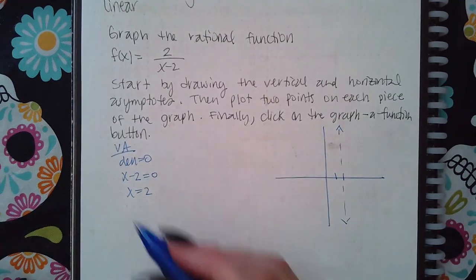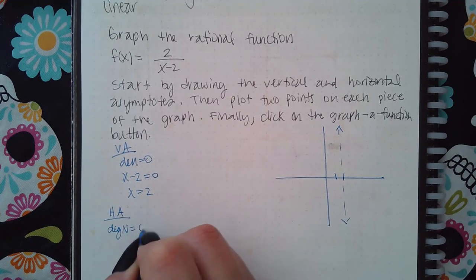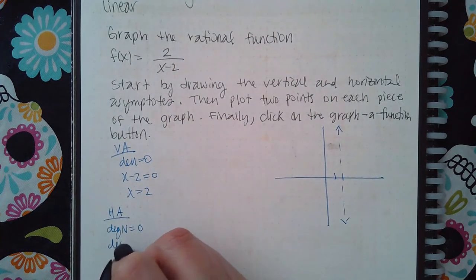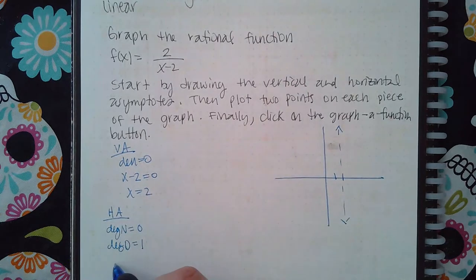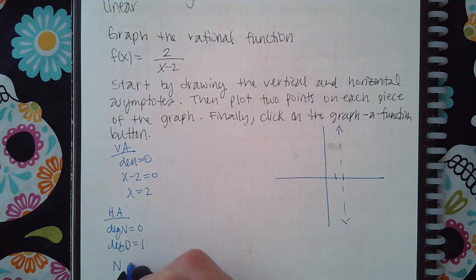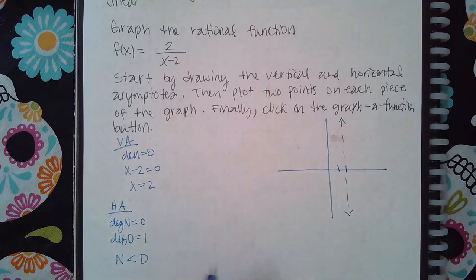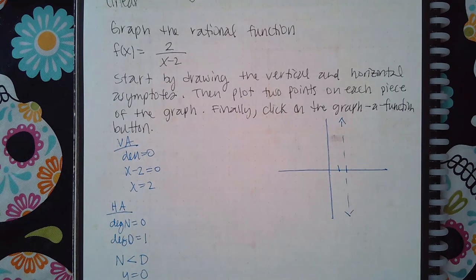Then for the horizontal asymptote, the degree of my numerator is zero because there's no x's to have an exponent, and the degree of the denominator is just one. So I have the case where the numerator's degree is less than the denominator's degree. When that happens, the horizontal asymptote is automatically at y equals zero.